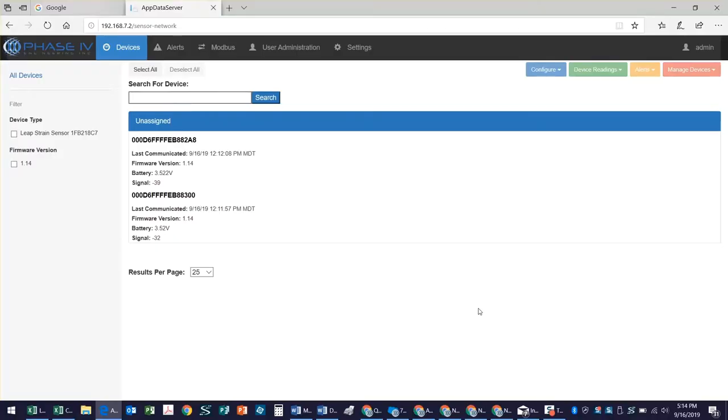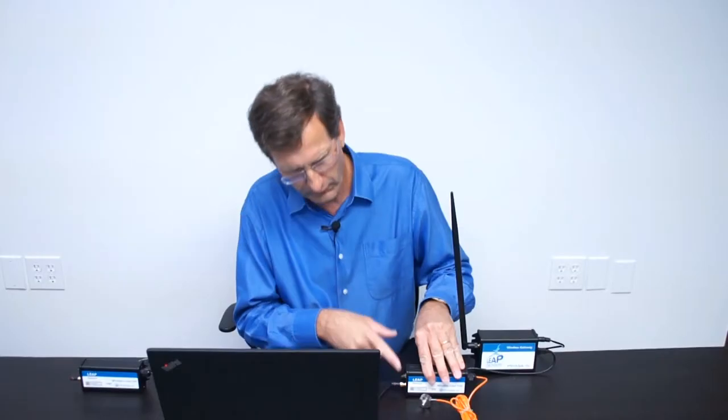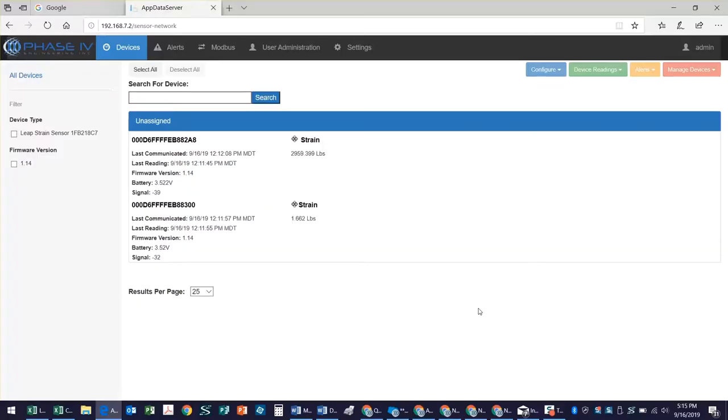Okay, there we have the screen, and there's my two strain sensors. I'm simply now going to turn them on, and it will take a few seconds for them to connect. And my system is up and running. There we go. There's our first reading.